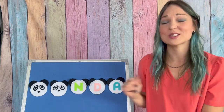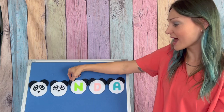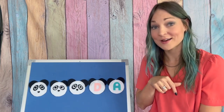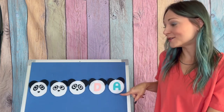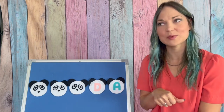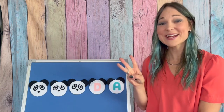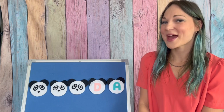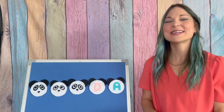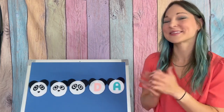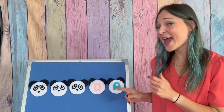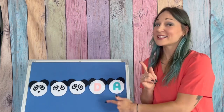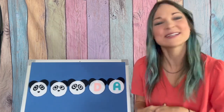All right, friends. It's time to switch that middle letter. And now, how many letters are left to our song? One, two letters. And how many claps will we do? One, two, three claps. That's right. Here we go. There is a bear who loves bamboo. Panda is her name. D-A. D-A. Panda is her name. It's kind of hard to keep up with that rhythm there at the end, friends.